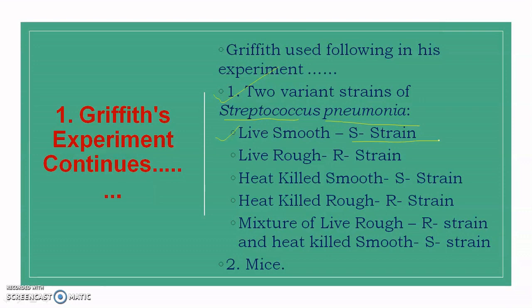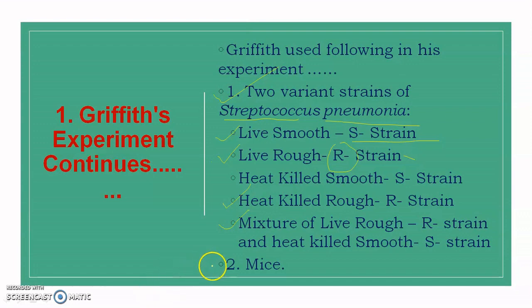He also used heat-killed smooth (S) bacteria, and a mixture of living rough (R) bacteria and heat-killed smooth (S) bacteria, along with mice for his experiment. Griffith used two strains of pneumococcus: Type 3S (smooth), which is virulent, encapsulated, and causes pneumonia; and Type 2R (rough), which is non-virulent, non-encapsulated, and does not cause pneumonia.